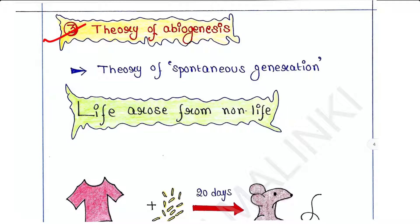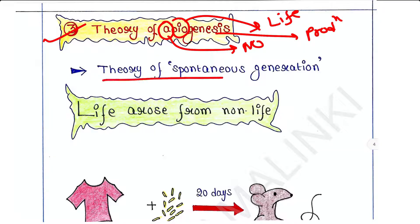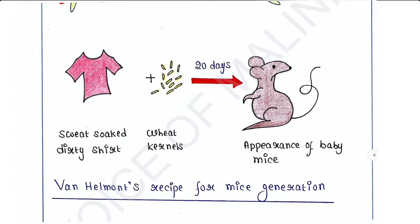Next is theory of abiogenesis. A means no, bio means life, and genesis means production or formation. This theory was also called theory of spontaneous generation. In 17th century, this theory suggested that life arose from non-life, such as decaying and rotting matter like straw, mud, etc.